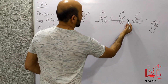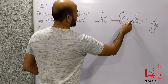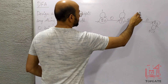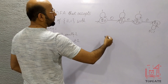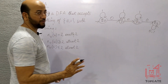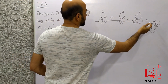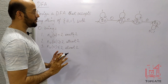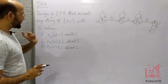For example, 0,0 will be accepted; 1,0,1,0 will be accepted; 1,0,1,0,1,1,1,1 will be accepted. But 0,0,0 will not be accepted because it has three 0s. So this is the DFA for the first case.